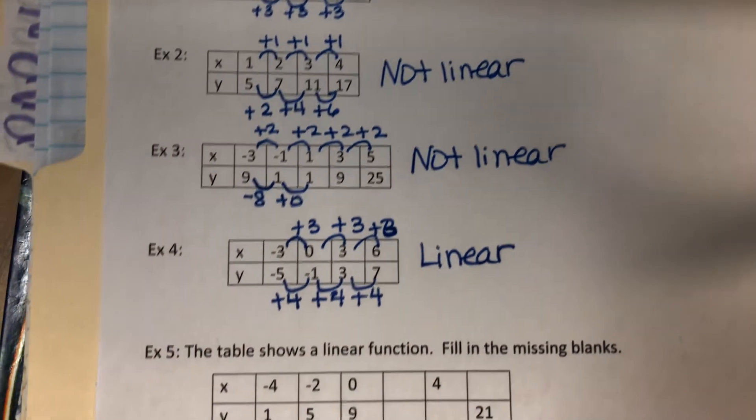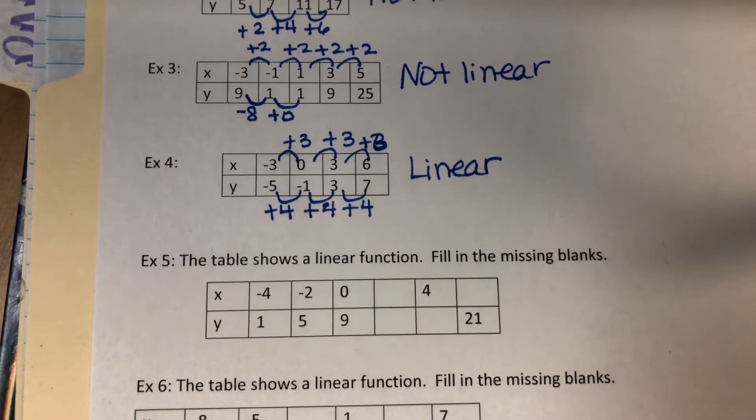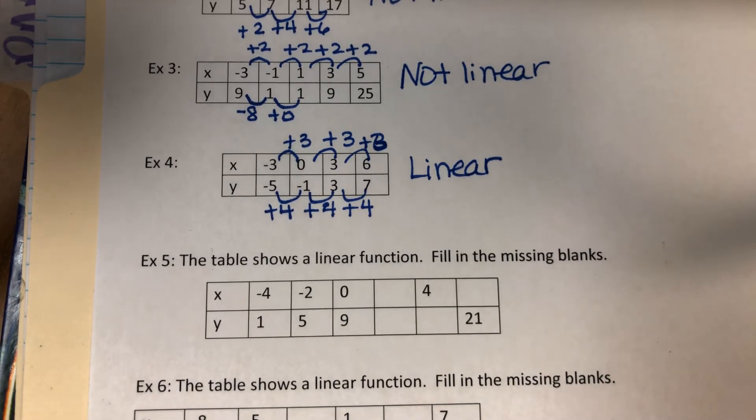Now 5 and 6 are a little bit different. On 5 and 6, I'm telling you they are linear. So we need to fill in the missing blanks knowing that they are linear.